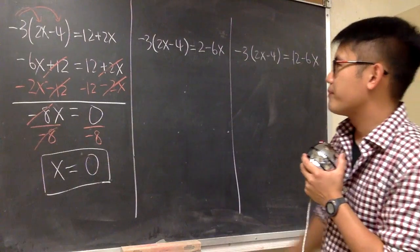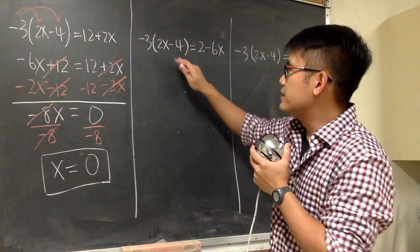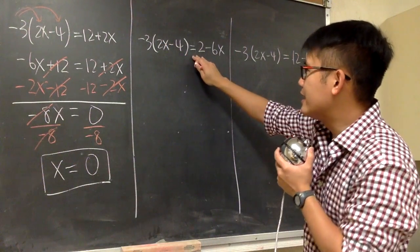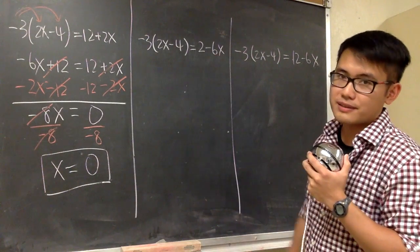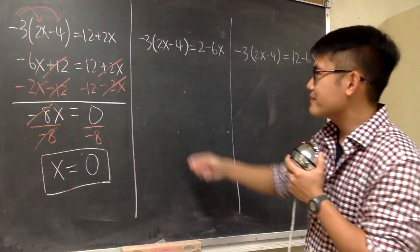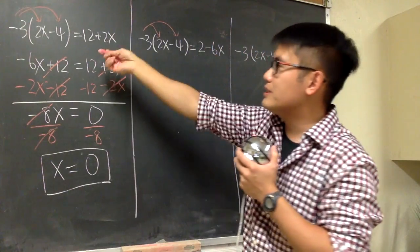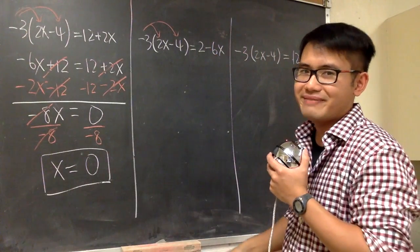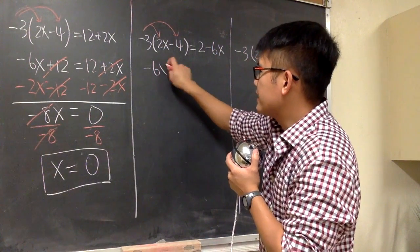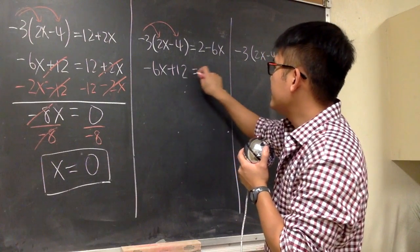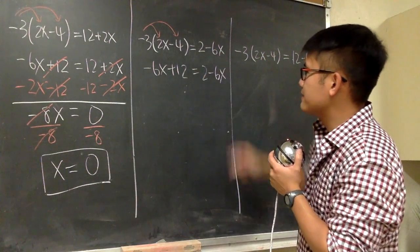And now let's look at the second one. Negative 3 times the parentheses, 2x minus 4 inside. And this time we have this equal to 2 minus 6x. So let's go ahead and distribute, just like what we did over there. Here we get negative 6x plus 12, and this is equal to 2 minus 6x.